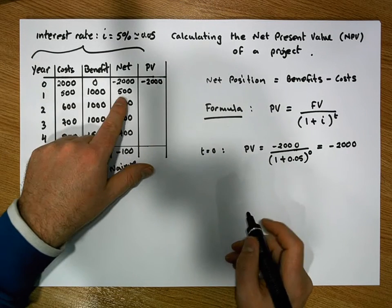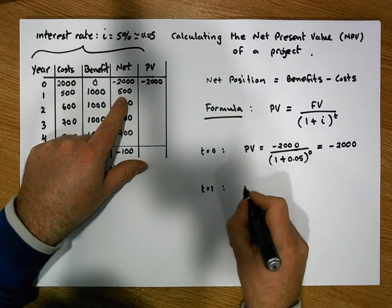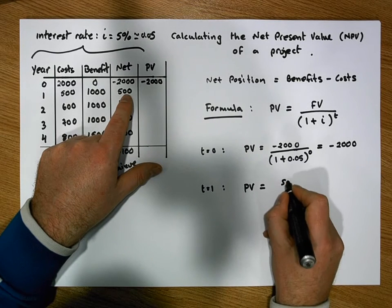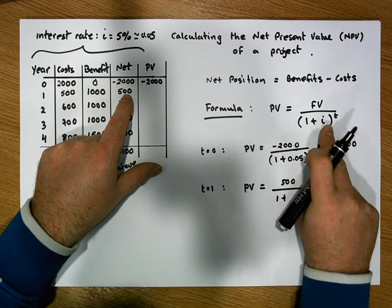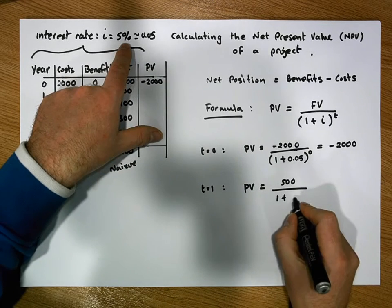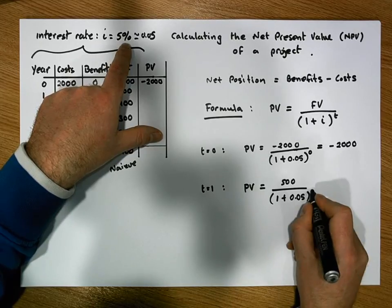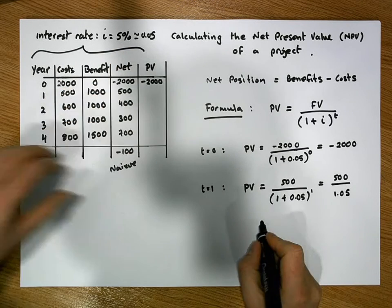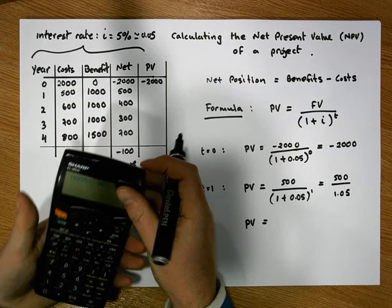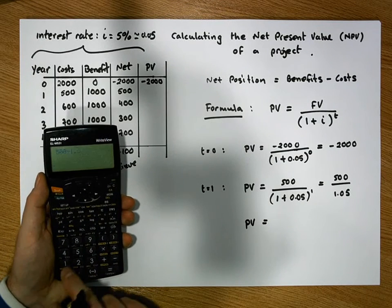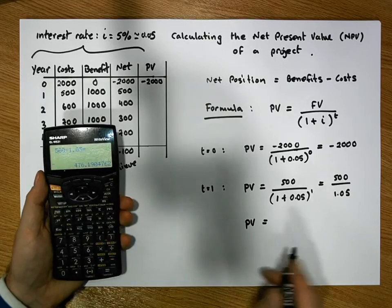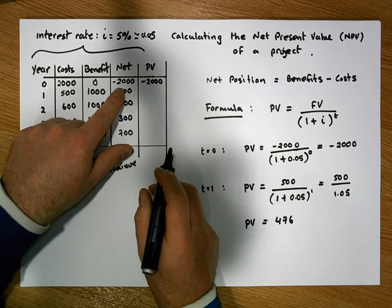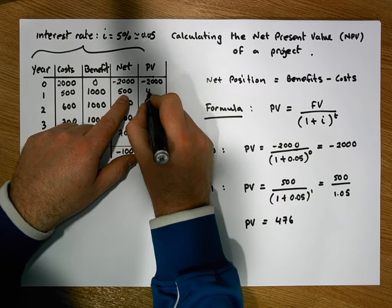Let's have a look at when t is equal to one. So when t is equal to one, we end up with that the present value is equal to, well, what's the net position in year one or after one year has elapsed? It's 500 euros divided by one plus the interest rate. And the interest rate we're assuming to be 5%. So it's 0.05 and that needs to be discounted by one year. So that's 500 divided by 1.05, which gives us a present value of 500 divided by 1.05, gives us a value of 476 euros and 19 cent, or let's just say 476 euros. So 500 euros in one year's time is only worth 476 euros today.